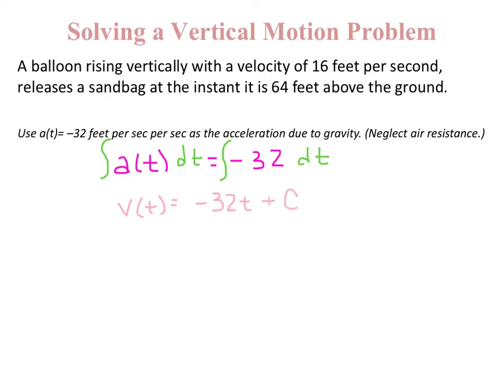So we need to figure out what C is. Well, V(0) at the instant it is released has 16 feet per second as its velocity, so V(0) is going to be 16.